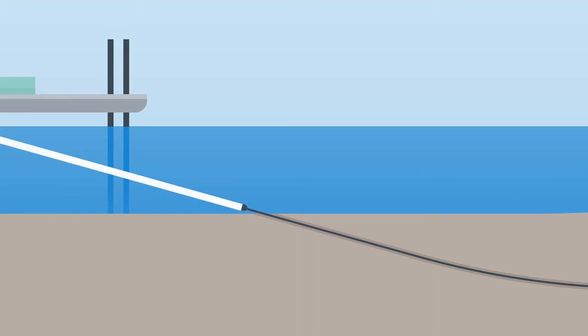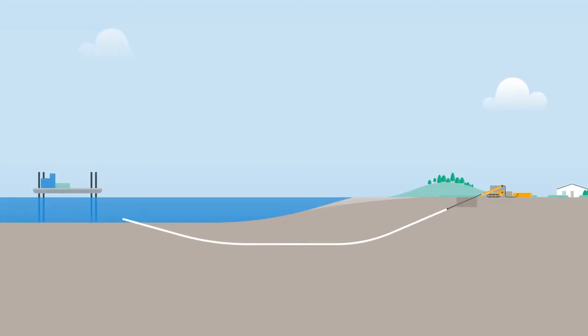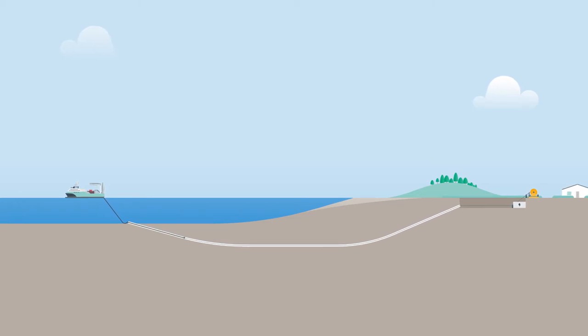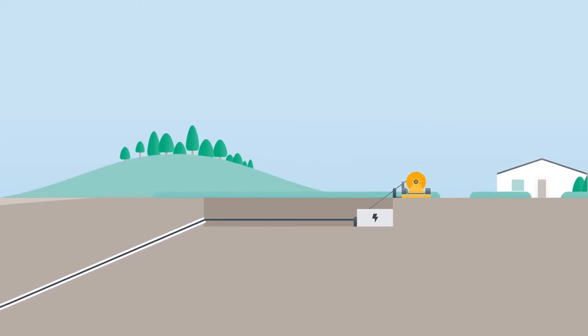Next, the drilling rig pulls back a conduit pipe through the bore hole connecting the offshore and onshore workspaces. Then, pull equipment is set up at the onshore worksite to pull back the cable from a cable lay vessel through the conduit pipe to the shore.